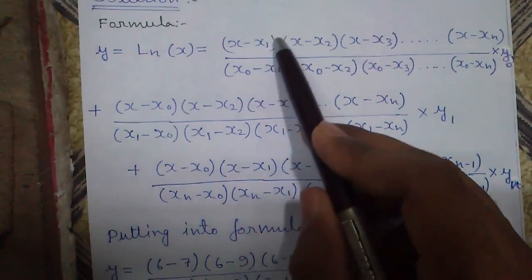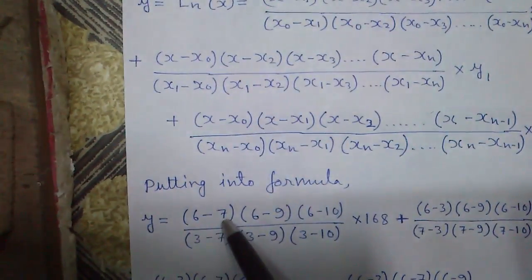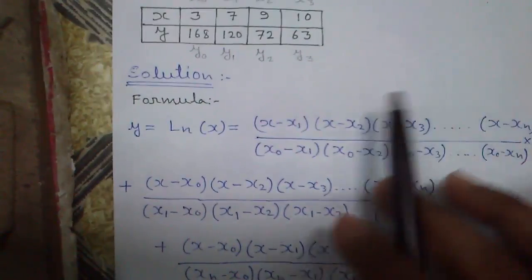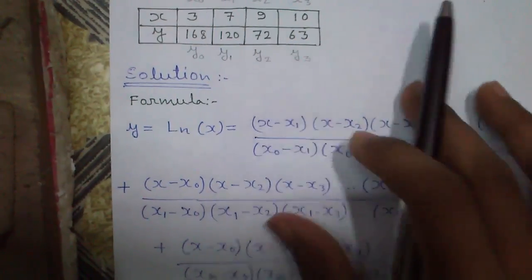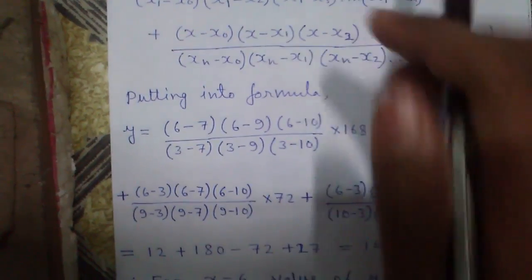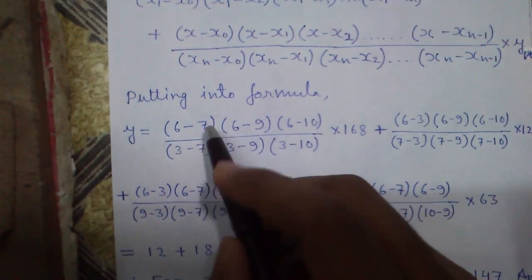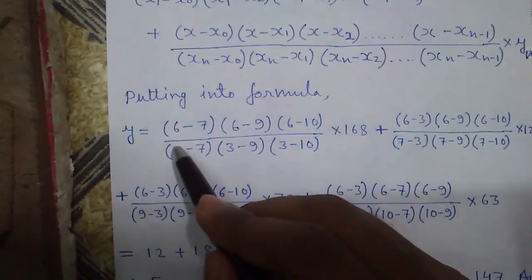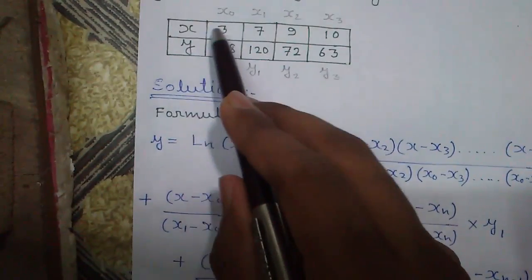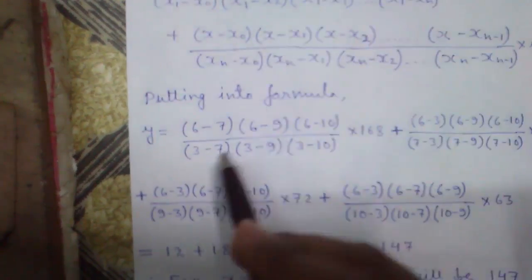So y equals x minus x1, x1 is 7, so 6 minus 7, then x minus x2 that is 9, 6 minus 9, and x minus x3 that is 10, so 6 minus 10 divided by x0 was missing. So x0 is 3, so everything will be subtracted from 3.